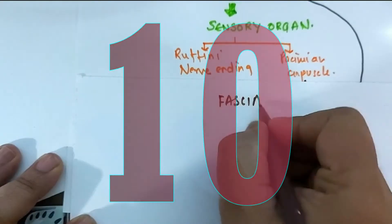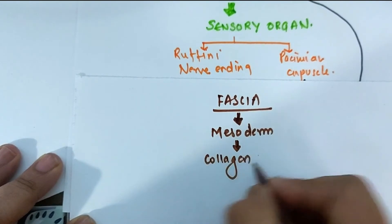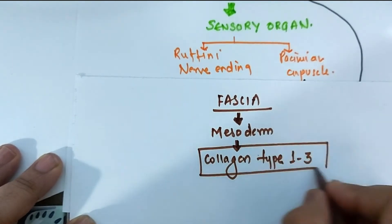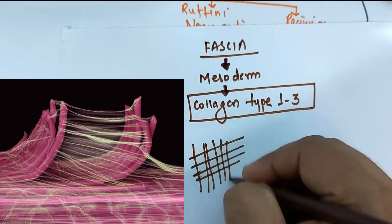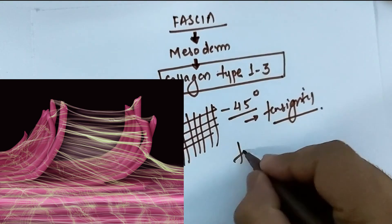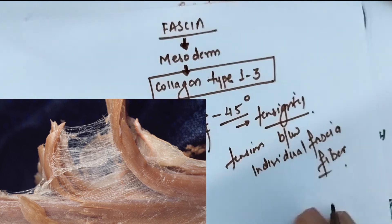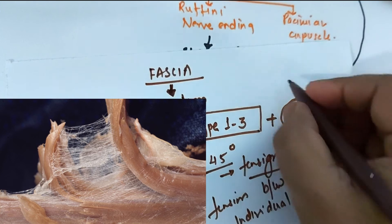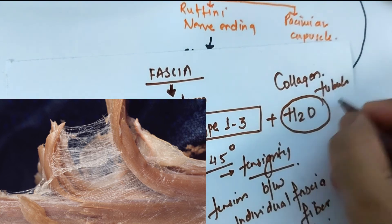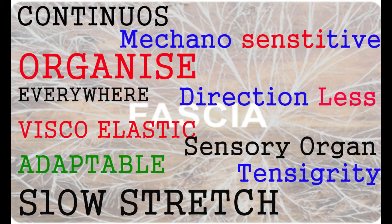The last property: fascia has been originated through a mesoderm layer in embryogenesis. It's often comprised of the collagen type 1 and 3. And if you look at the cross-section of the orientation of collagen fibers, it's oriented at 45 degrees. This particular collagen fiber is responsible for maintaining the tensegrity between them, which helps them to make a highly tensile structure. Along with the collagen fibers, major part of fascia is made up of water. So these were the properties of the fascia. Revise them properly and hope you like this particular information.